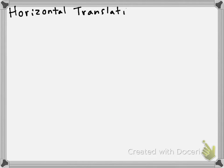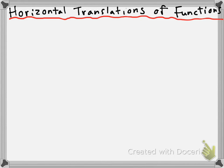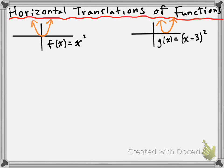Now let's talk about horizontal translations of functions. We'll start back with parabolas. We have our parent parabola f of x is equal to x squared. If we horizontally translate it — meaning moving it left or right — we might end up with this, which is the same parabola shifted to the right three units. The equation would be g of x is equal to x minus 3 all squared. Instead of just x squared, we've replaced x with x minus 3. That tells us we've shifted to the right three units. If you were to move to the left, you would have plus 3 instead.